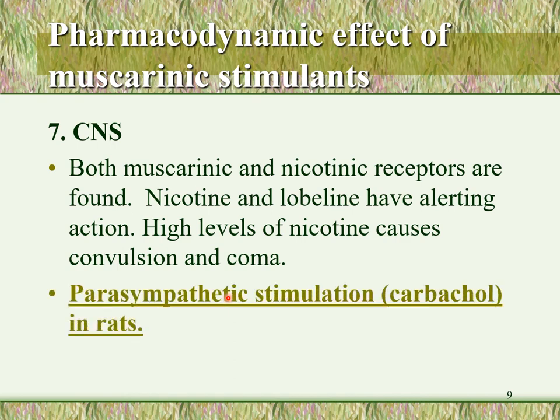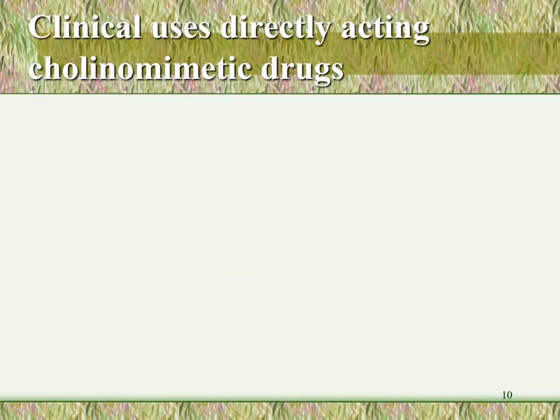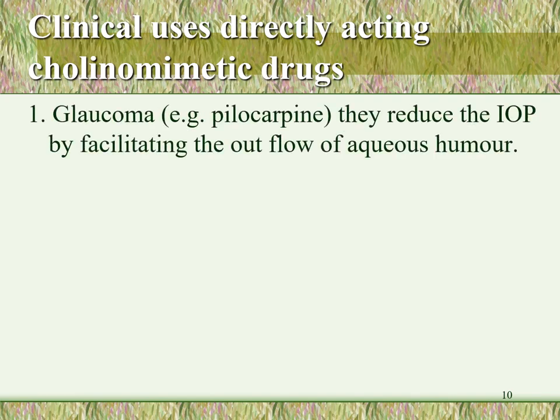There is a video on the parasympathetic stimulation — the carbachol effect on rats — which will be sent along with the lecture. The clinical uses of directly acting cholinomimetic drugs: first, glaucoma. Pilocarpine 2% and 4% eye drops can be used for treatment of glaucoma, as it reduces intraocular pressure by facilitating the outflow and drainage of the aqueous humor, as discussed previously.